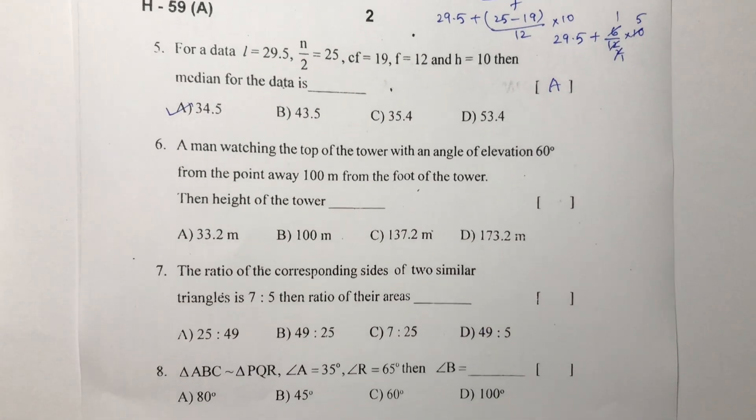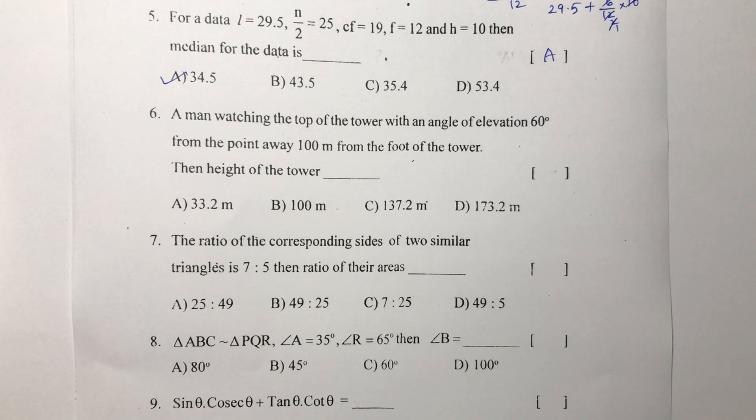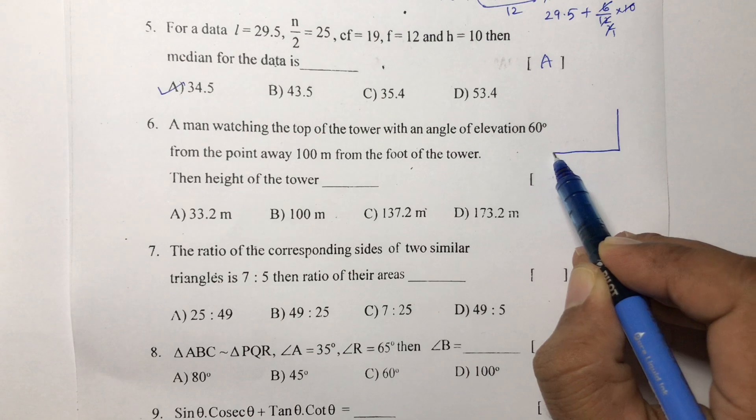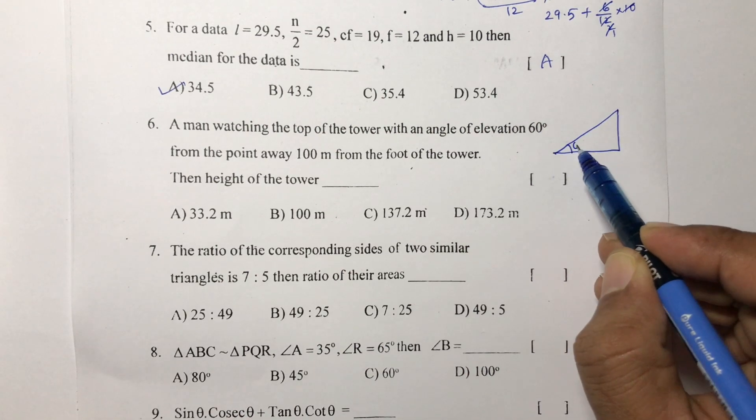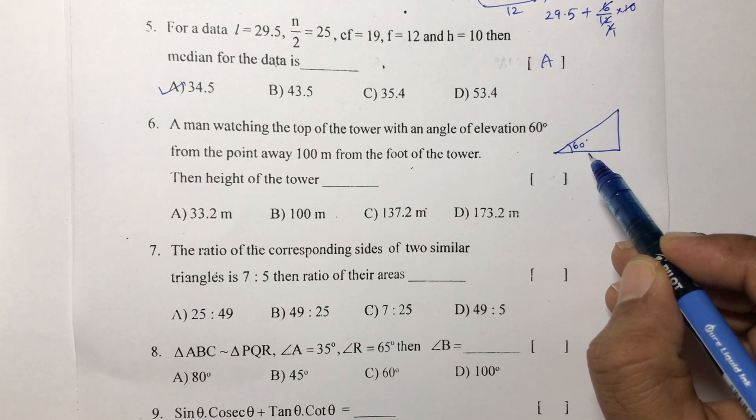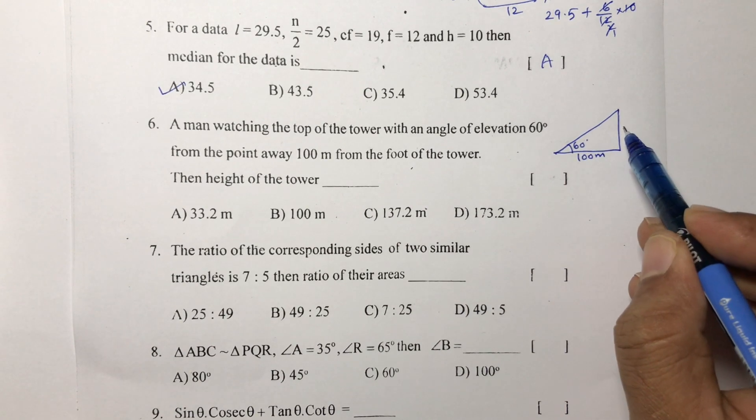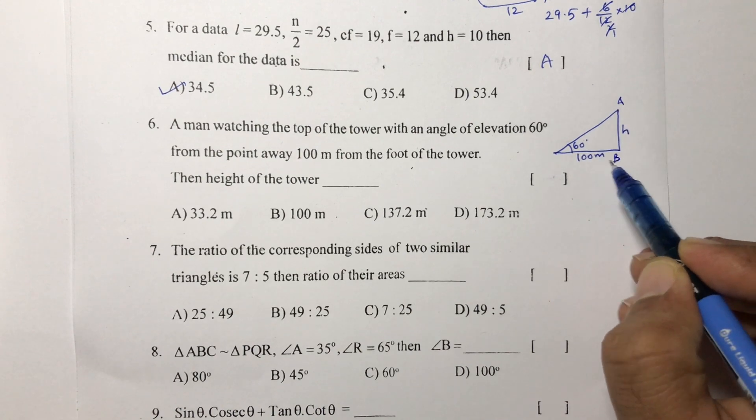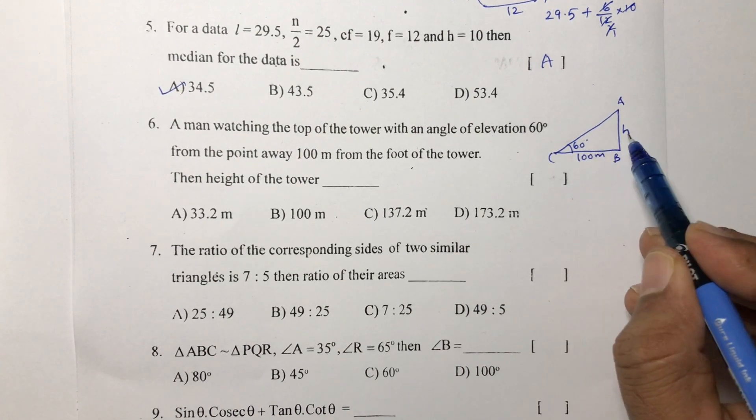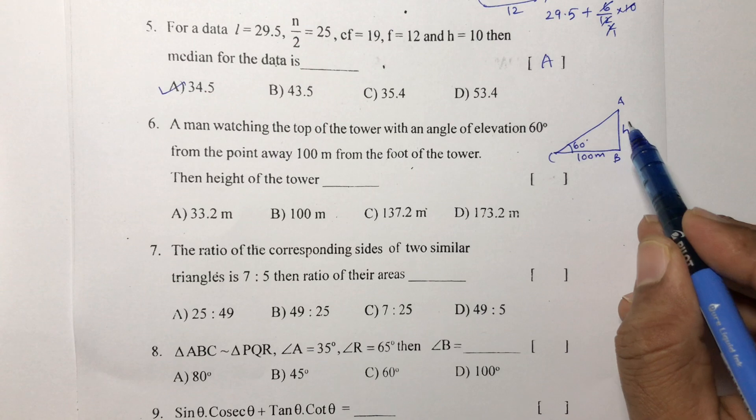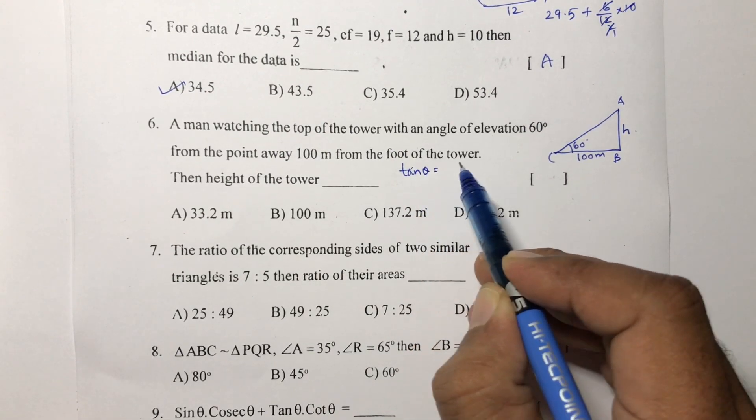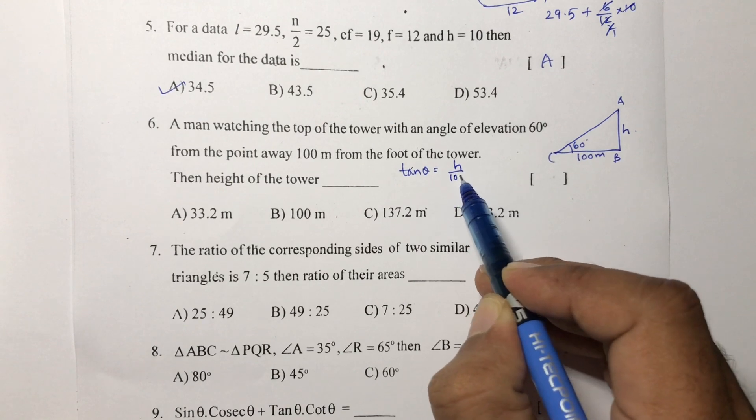Next, a man watching the top of a tower with an angle of elevation 60 degrees from a point 100 meters from the foot of the tower. Find the height of the tower. Here I need to find h. I'll use tan theta because I have opposite and adjacent, and I need to find opposite. Tan theta is opposite by adjacent.